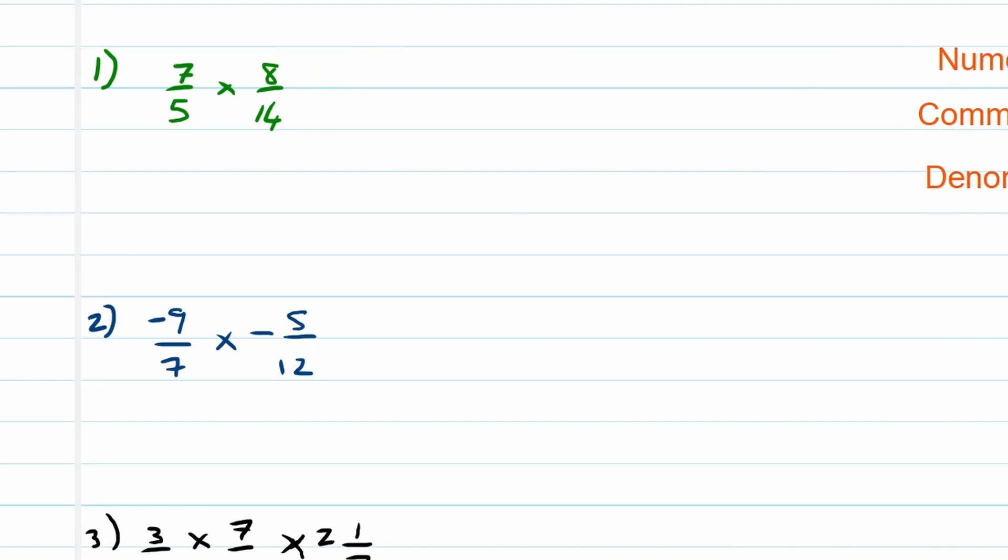First things first. That's now the common factor step. You have a look at 7 and 14. Do they have a common factor? Yes they do. 7 can divide into itself. 14 can be divided by 7 and you'll get 2. But 8 and 5 do not have common factors. So this means we can write this as 1 over 5 times 8 over 2.